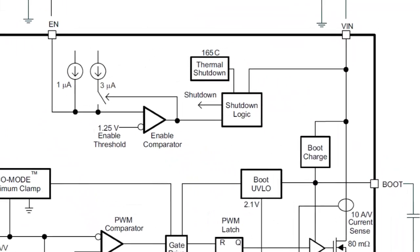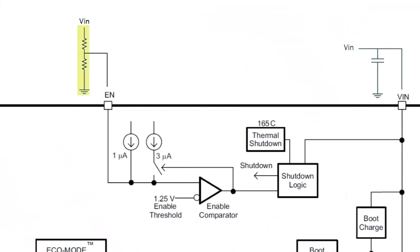The enable pin is typically driven with a voltage divider from the input voltage. This is used to put the device into shutdown when the input voltage reaches an under-voltage condition. There is also a thermal shutdown.